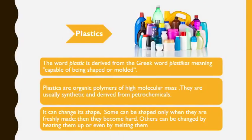Now we will cover the topic of plastics. The word plastic is derived from the Greek word 'plasticos,' which means capable of being shaped or molded. Chemistry-wise, plastics are basically organic polymers of high molecular mass, and they are also derived from petrochemicals. Some plastics can be shaped only when freshly made and then become hard, while others can be reshaped by heating or melting.